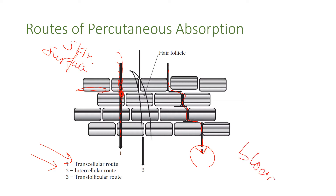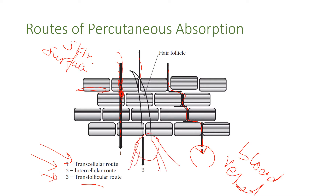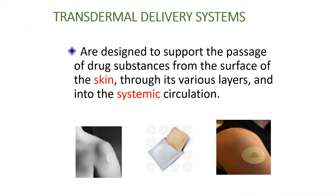The blood vessel is located here, for example. Number three is transfollicular or transappendageal absorption, which is absorption through the hair follicle where there are many blood vessels reaching the follicle from below, as well as sweat glands. Our transdermal drug delivery system should be designed to help build cutaneous permeation — permeation of the active ingredients through the skin until it reaches systemic circulation.